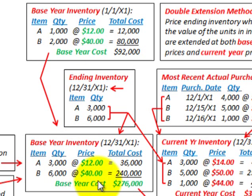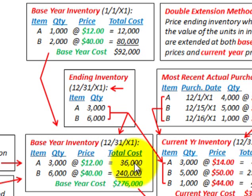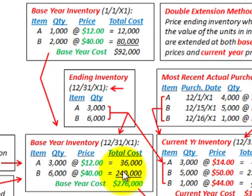Calculating the base year cost: we have 3,000 units of Item A at $12 base year cost, giving a total of $36,000. For Item B, we have 6,000 units at $40 per unit base year cost, giving us $240,000. Adding those together — $36,000 plus $240,000 — we get a base year cost of $276,000.